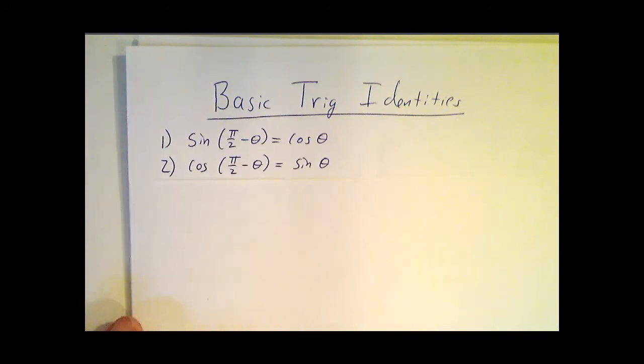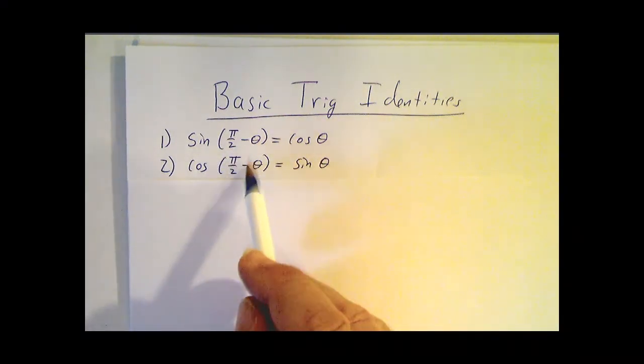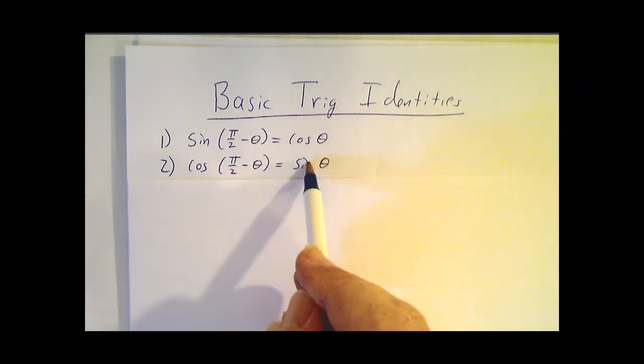We've already seen a couple of them, that the sine and the cosine of a complementary angle are the cosine and the sine of the original angle.